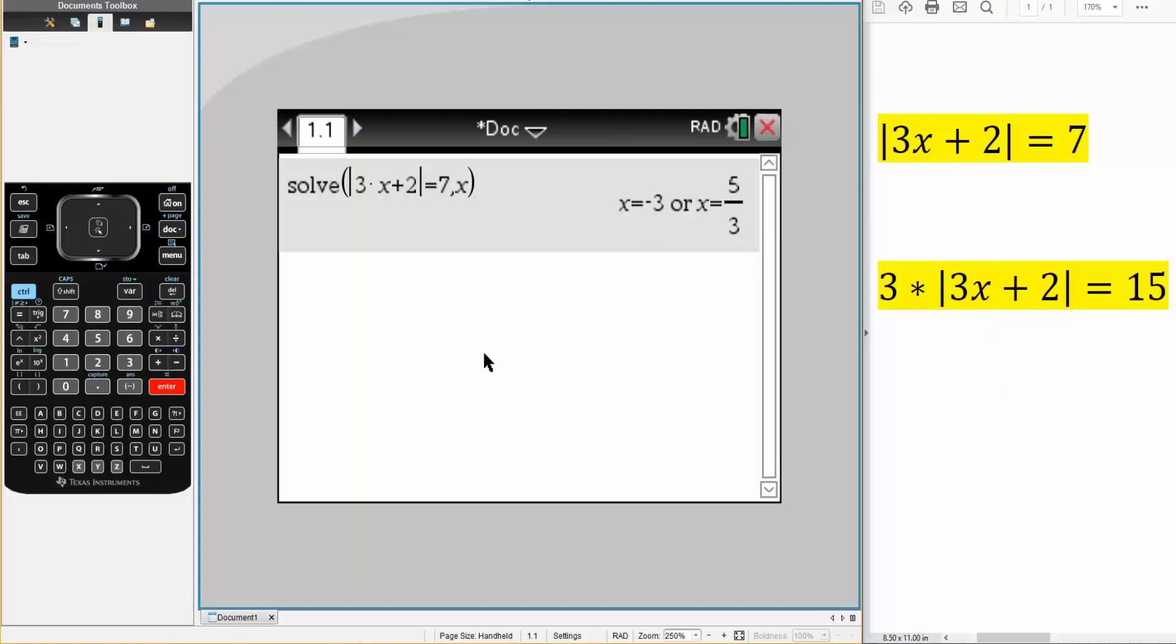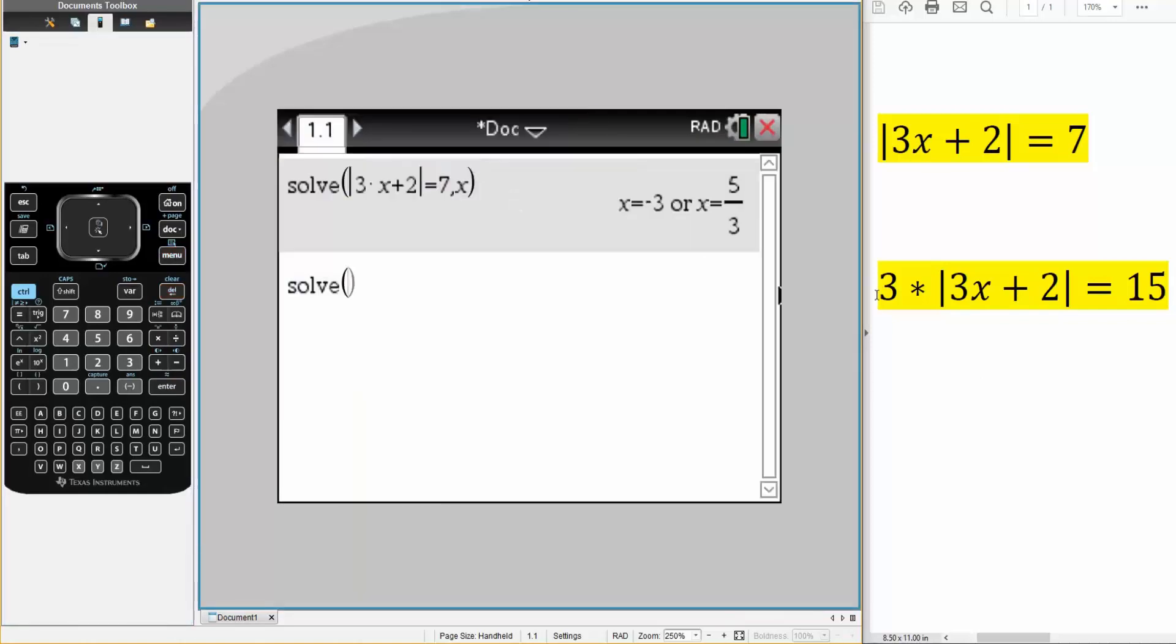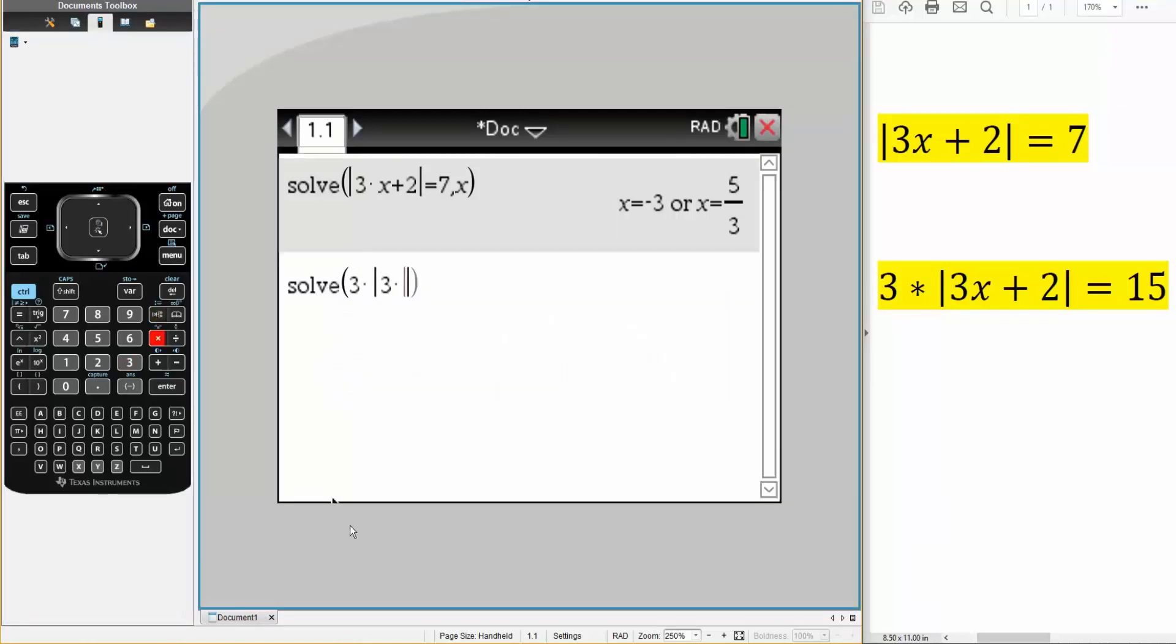So we'll also do this problem again. So we'll hit Menu, Algebra, Solve. We have a 3 in the front, so 3 times absolute value, so this icon right here. We hit the absolute value sign. 3 times x plus 2 is equal to 15.